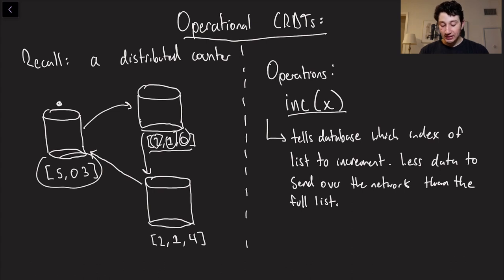So in the case of a distributed counter, there's only one operation, and that would be increment. So for example, if this guy gets incremented, and this is, say, the 0th leader, we might go ahead and send inc(0) to the next database, and that's now going to change its vector to 3, 1, 0.